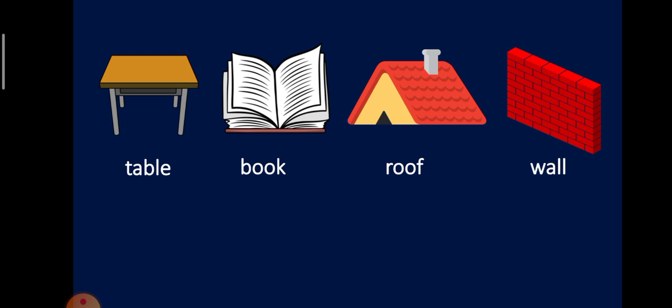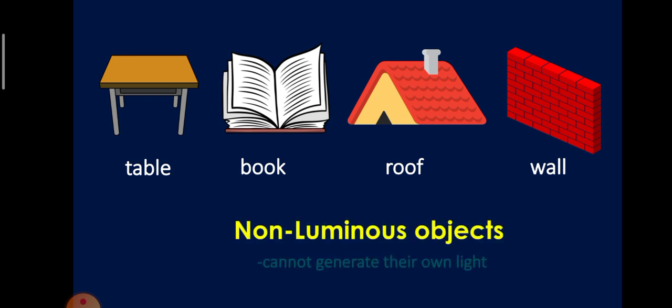Objects like table, book, roof, and wall, and most of the things around us are called non-luminous objects. Non-luminous objects cannot generate their own light.